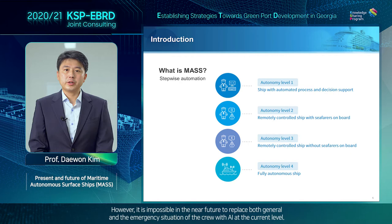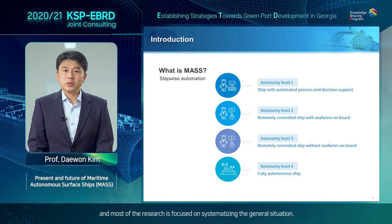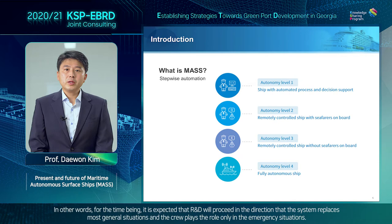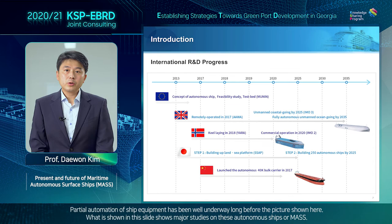However, it is impossible in the near future to replace both general and emergency situations of the crew with AI at the current level, and most of the research is focused on systemizing the general situation. In other words, for the time being, it is expected that R&D will proceed in the direction that the system replaces most general situations and the crew plays a role only in emergency situations. Partial automation of ship equipment has been well underway long before the picture shown here.